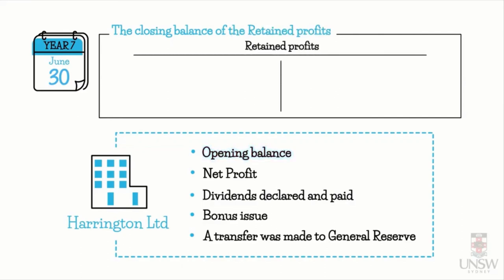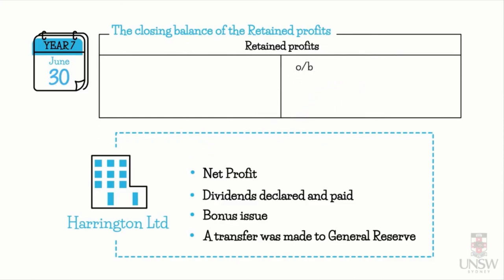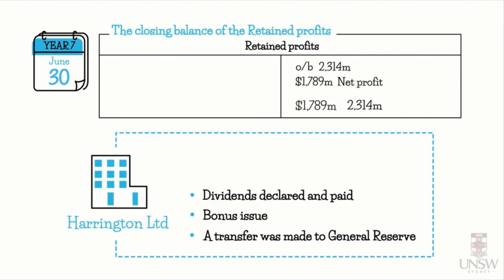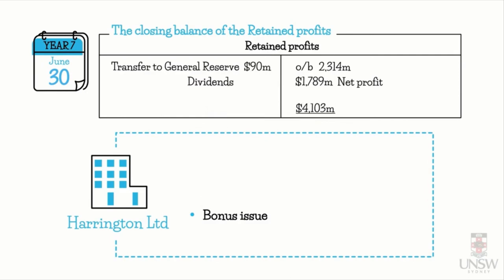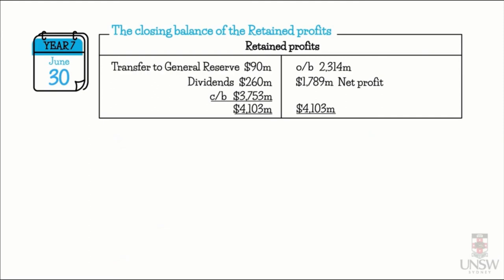Retained profits is a credit-natured account. We place the opening balance on the credit side: $2,314 million. Then record net profit on the credit side: $1,789 million — this increases the equity account. The credit side totals $4,103 million. On the debit side, we record the transfer to general reserve — $90 million — which decreases retained profits, and the dividends declared and paid of $260 million.